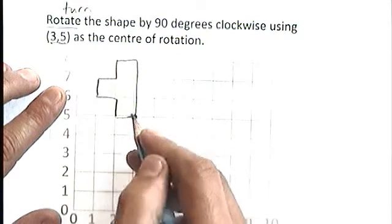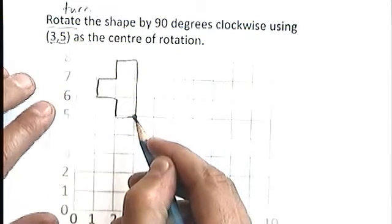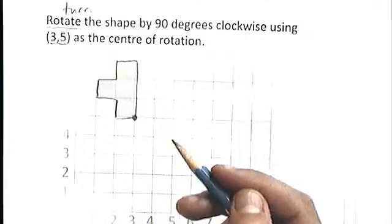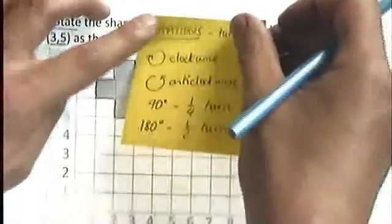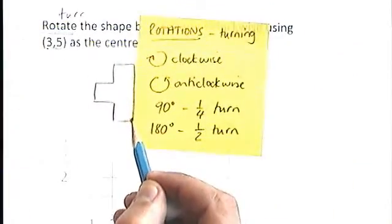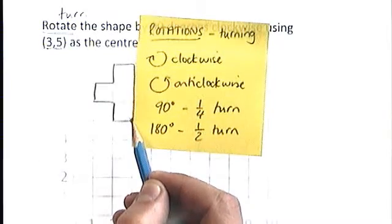You need to leave your pencil there. Once you've put that blob on the shape, put your pencil at that point. Then what you need to do is think about what you know. We've got clockwise, anticlockwise, quarter of a turn or half a turn.